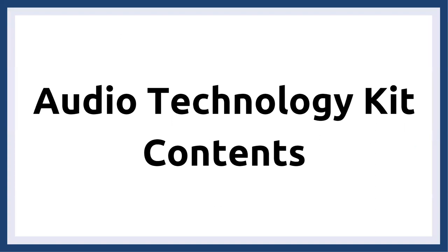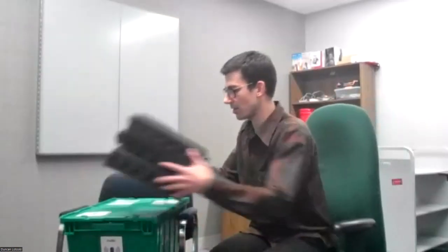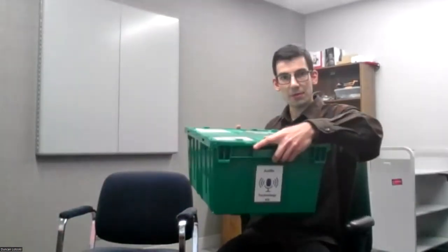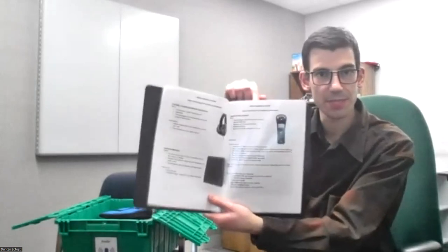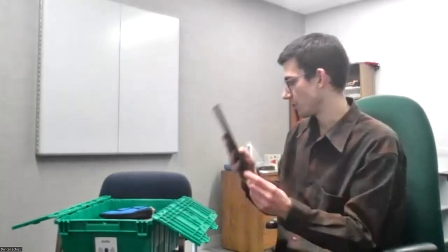Now I'm going to show you what our audio technology kit has in it. This is our audio technology kit — when you request it, it'll come to you like this. When you open the kit, the first thing you'll find is this resource folder. In the resource folder we have our lending policy at the very front, information on all the contents of the kit, and instructions on how to use each of the different pieces of tech. It also includes a deep dive on Audacity, the audio software we're going to use today.